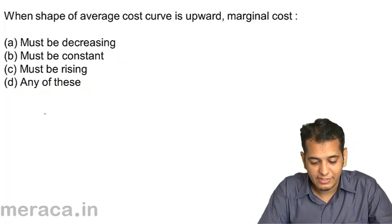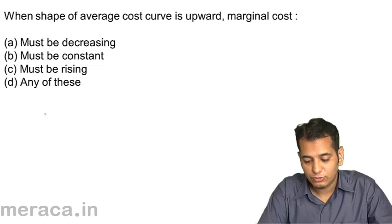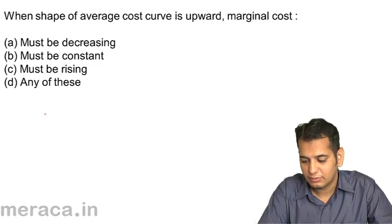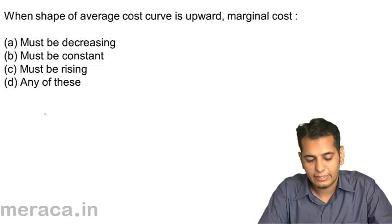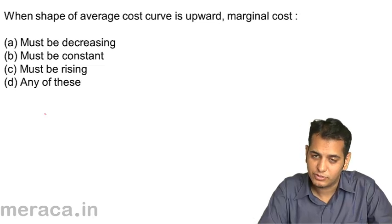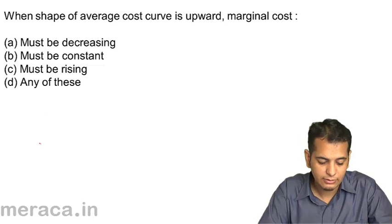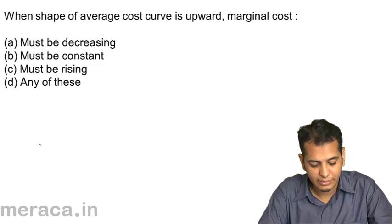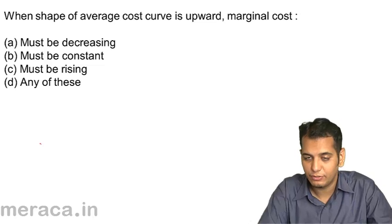When the shape of the average cost curve is upward, marginal cost: A. must be decreasing. B. must be constant. C. must be rising. D. any of these.